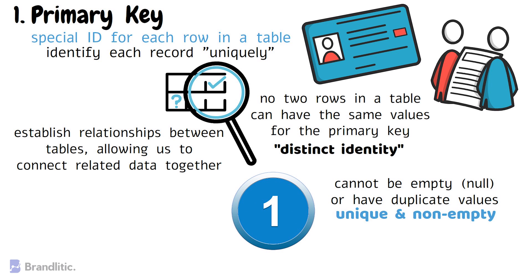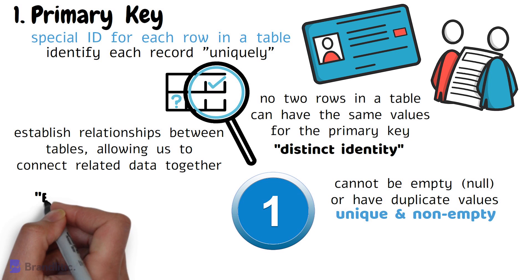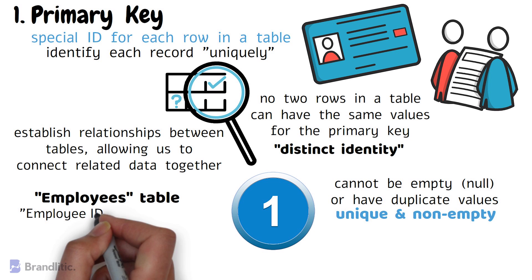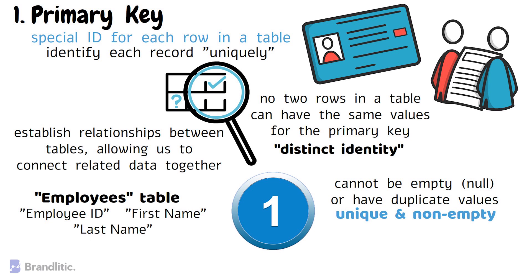For example, consider the employee table with columns like employee ID, first name, and last name. Here, the employee ID column can be chosen as the primary key as it uniquely identifies each employee.